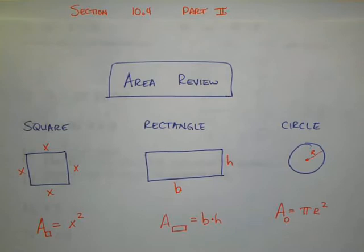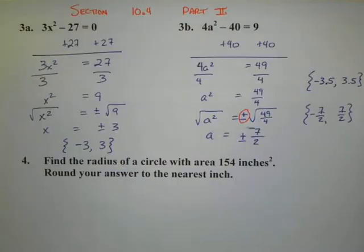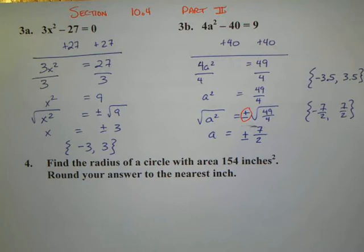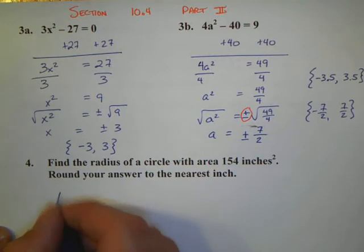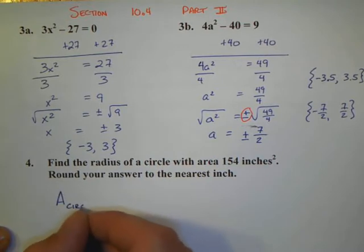You may have thought it was pi times d, or 2 pi r. That's the formula for the circumference of a circle, not the area. So let's use these formulas as we look at the next problem.